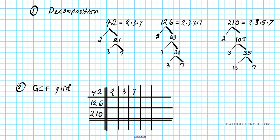126 is 2 times 3 times 3 times 7. We can place a 2 in the 2-column, a 3 in the 3-column, but the second 3 needs a new column, and 7 goes in the 7-column. For 210 — 2 times 3 times 5 times 7 — we place 2, 3, then 5 needs a new column since it can't go in the 7-column or 3-column, and 7 goes in the 7-column.